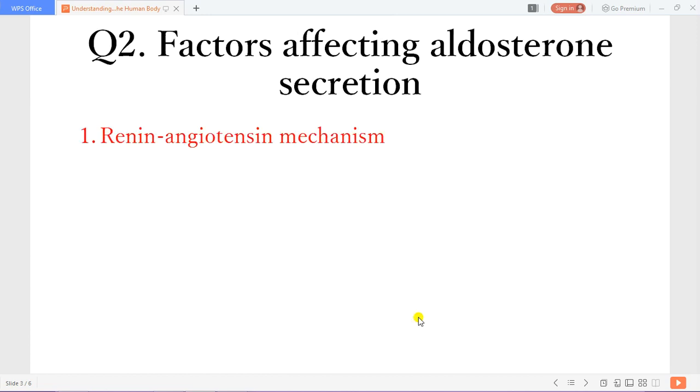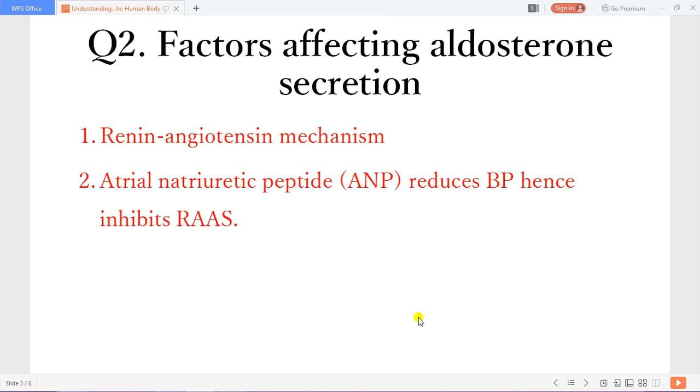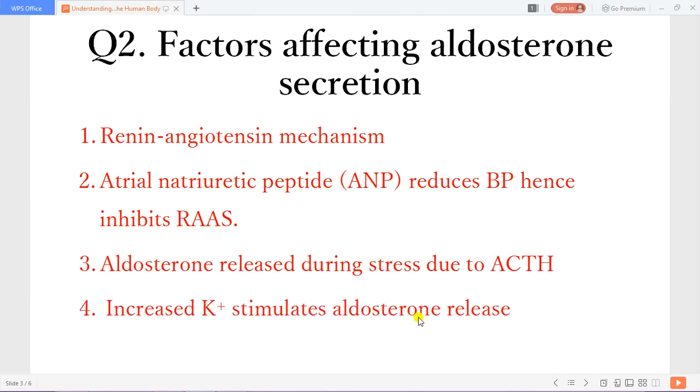So the factors that affect aldosterone secretion. One is the renin-angiotensin mechanism. Two, you have the atrial natriuretic peptide which reduces blood pressure, hence will inhibit the secretion of aldosterone. The aldosterone is also released during stress, and so ACTH plays a factor in aldosterone secretion. And finally, potassium increase will also stimulate aldosterone release.